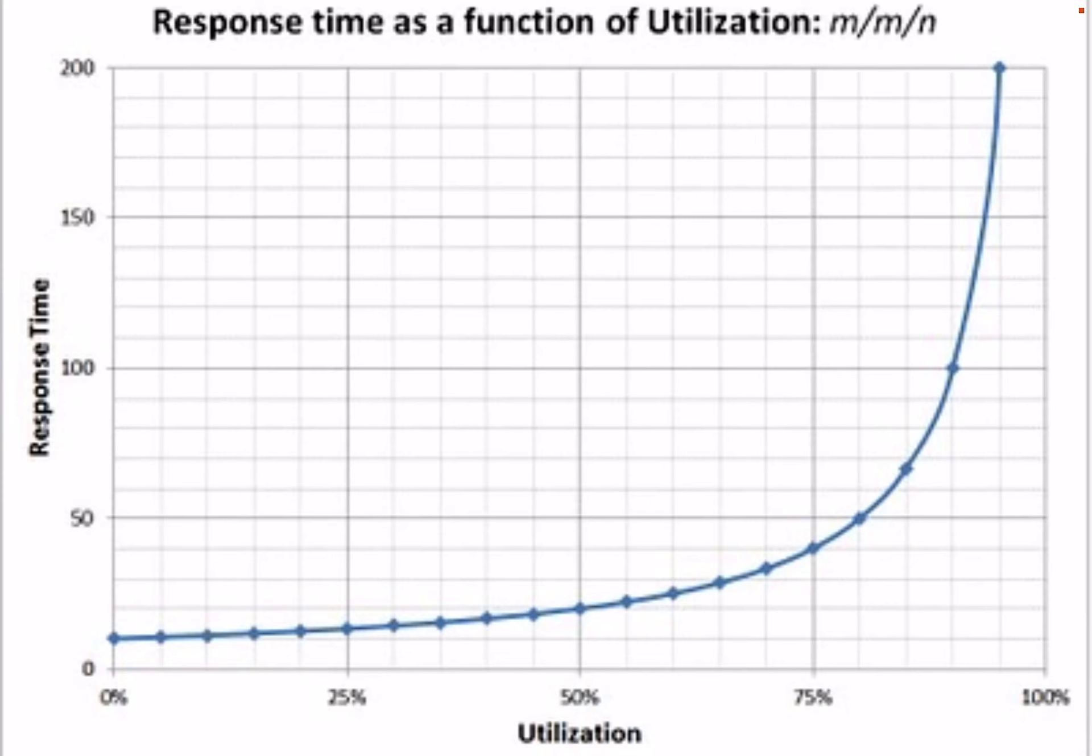At high utilization, what happens is an incoming request doesn't find available CPU for it to be executed, so it waits. And while it waits, another request comes in that also waits. So it's like a cascading effect. Everything adds up. That is why the utilization spikes. Since each request still takes 100 milliseconds to execute, a 10-second latency means that the queuing time is 100 times as much as execution time. The queues are really backing up. This happens in any system when the arrival rate is more than the completion rate.